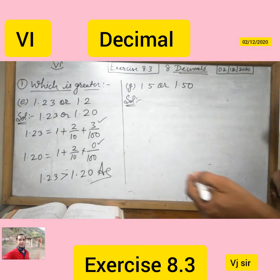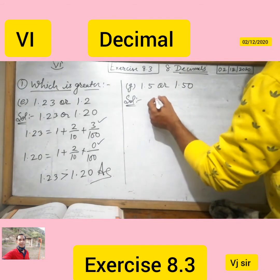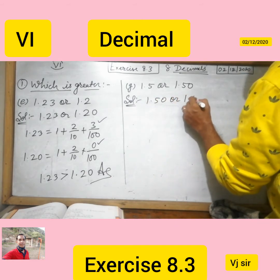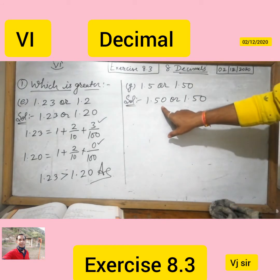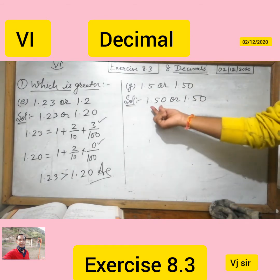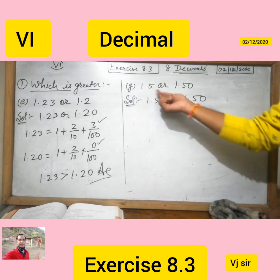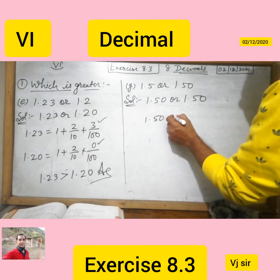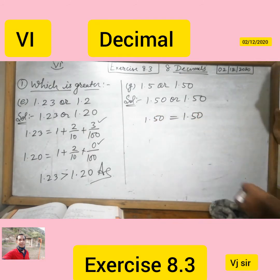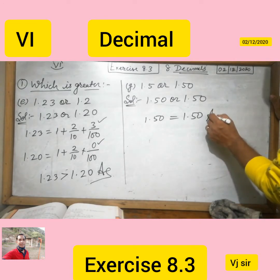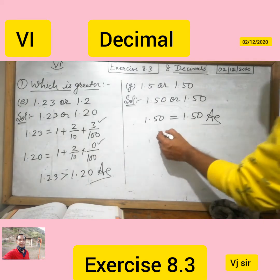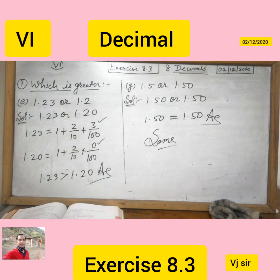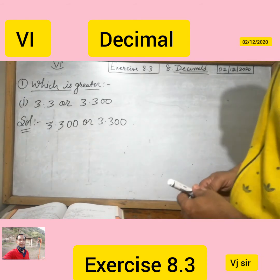Now we move to the next question: which one is greater, 1.5 or 1.50? We make the same number of decimal places: 1.50 and 1.50. Both numbers are the same, so 1.50 is equal to 1.50. Both numbers are equal.